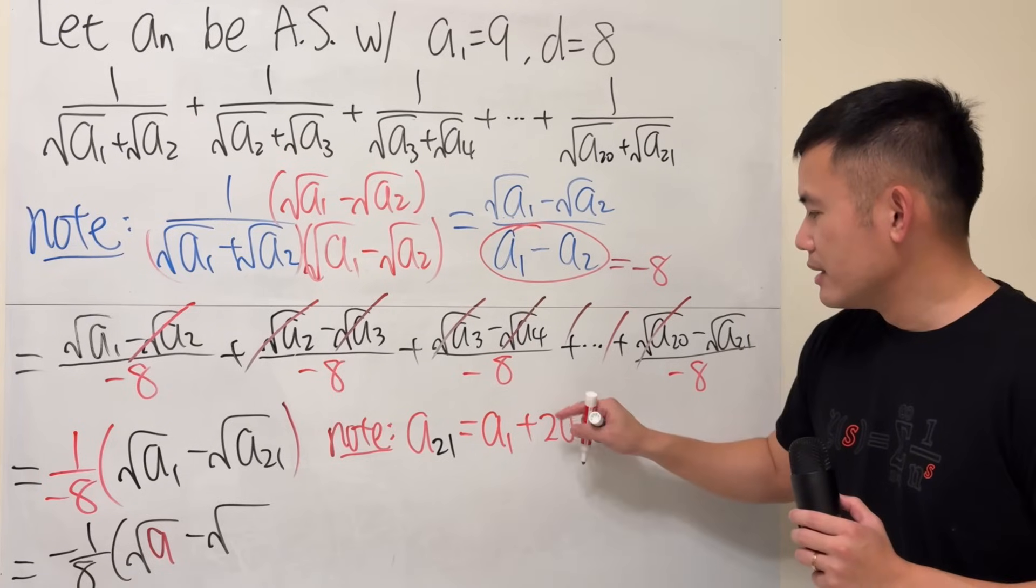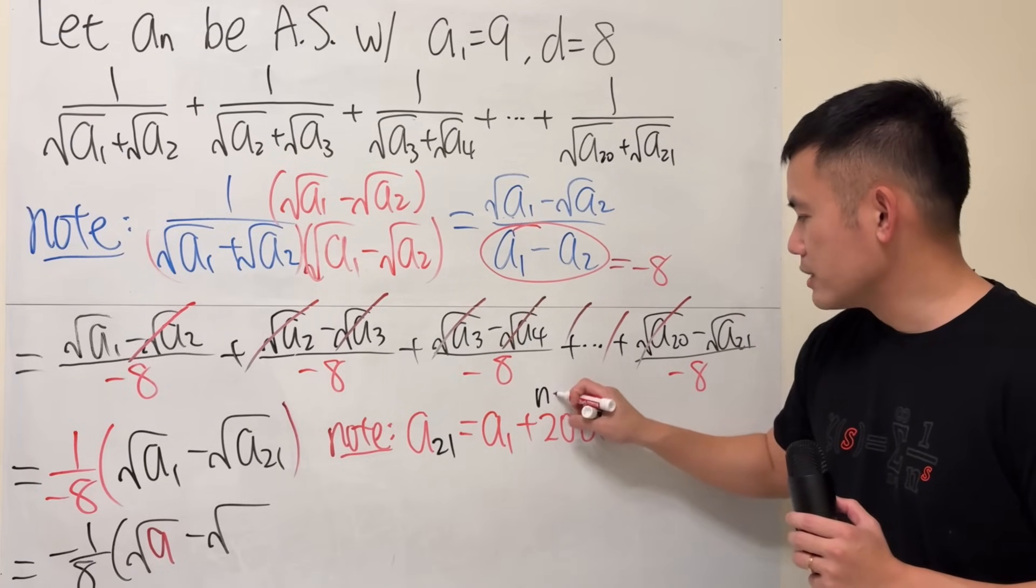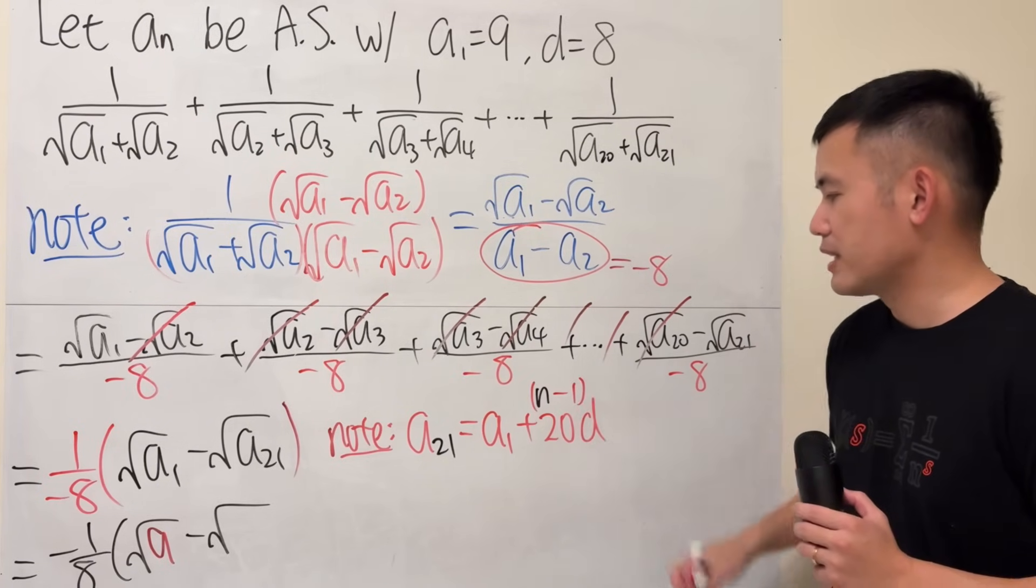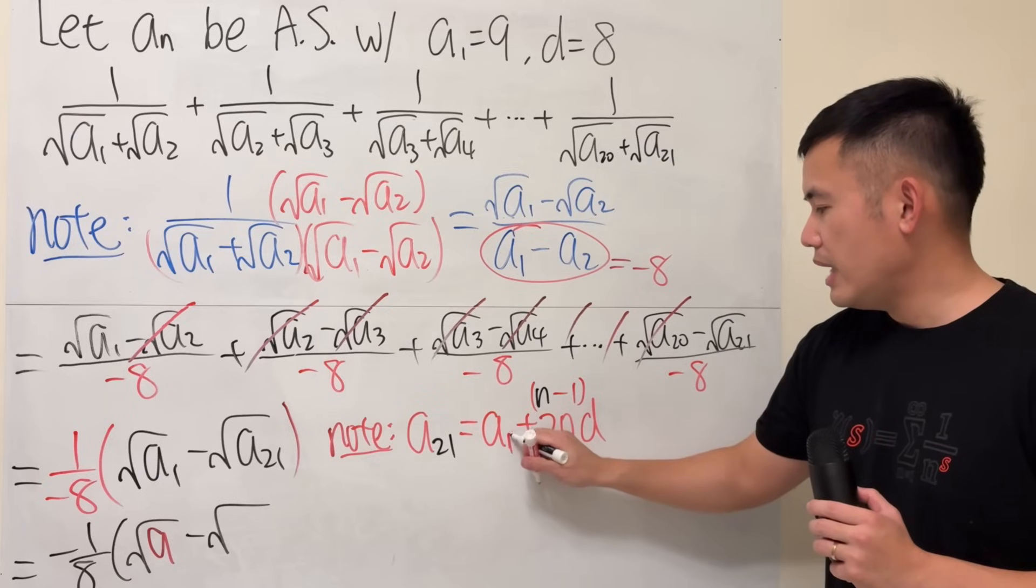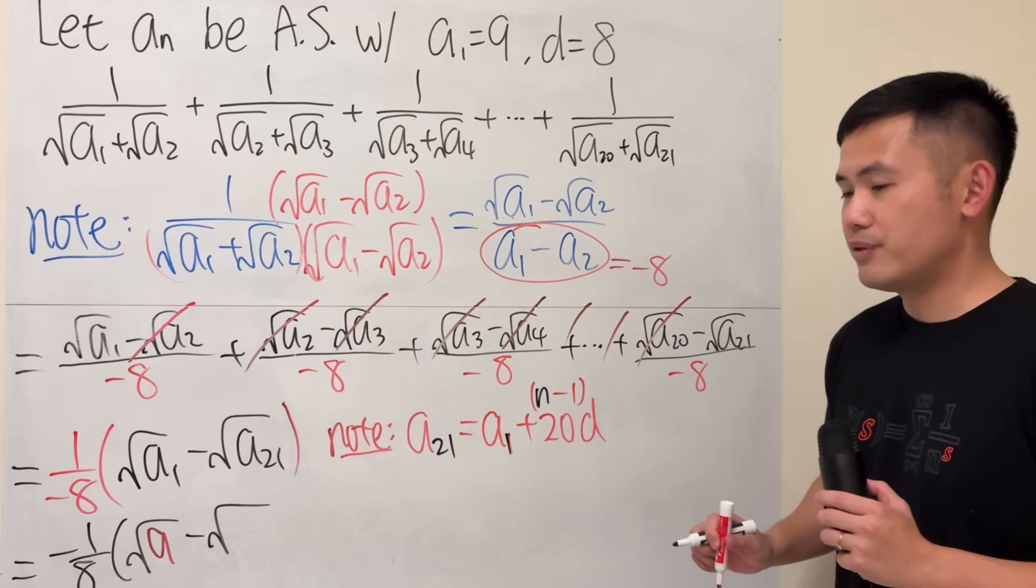So, we just have to multiply by 20, and then times the common difference. Here, it's a formula. Technically, this is n minus 1. It's always going to be like that. a1 plus n minus 1 times the common difference.